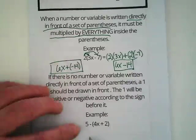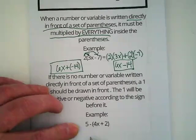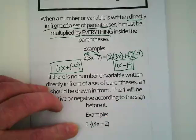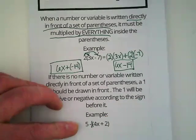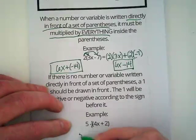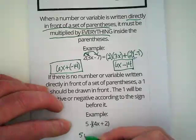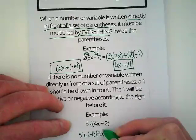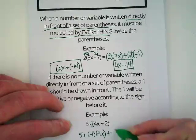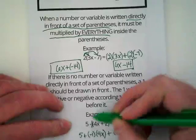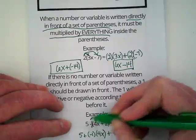Here's an example. Where do you see the negative in front of the parentheses? Right here. Draw in that invisible negative 1. We would rewrite this as 5 plus negative 1 times 4x plus negative 1 times 2. Because that negative 1 is what is being shared.